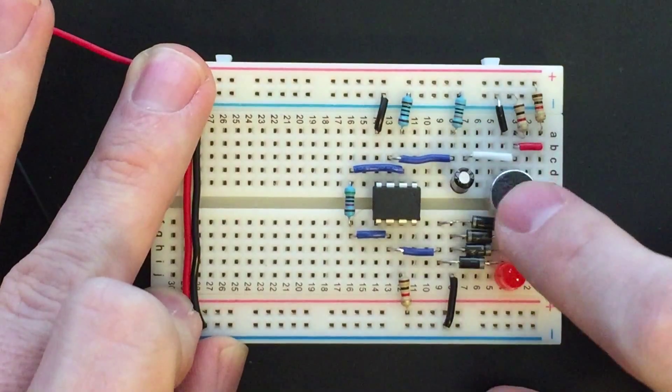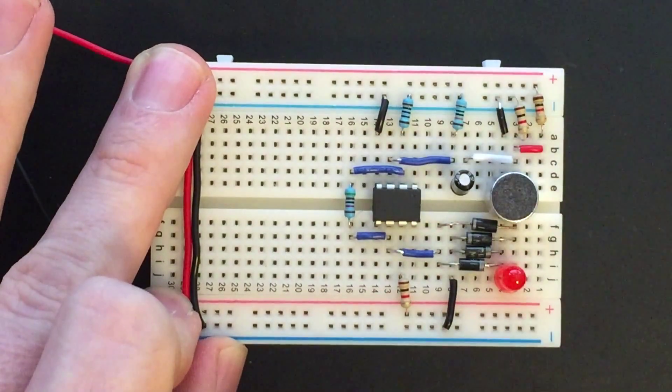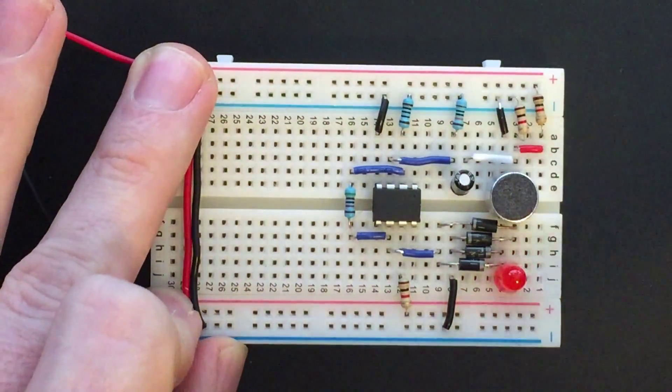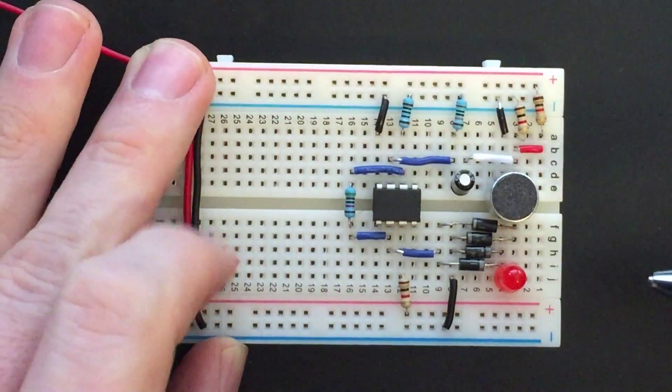Or we can sort of scrape it like this. We can blow on it very hard to get the LED to light up very brightly. And we see that this functions as a sound level meter as we'd hoped.